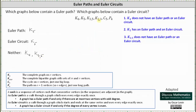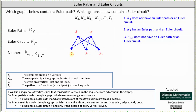Next, we have the complete bipartite graph K₂,₃, where we have two vertices in the first row and three vertices in the second row. Every vertex in the top row is adjacent to every vertex in the bottom row. The two vertices in the top row have degree three, and the three vertices in the bottom row have degree two. Because we have two vertices with an odd degree and three with an even degree, it does meet the condition for an Euler path since at most two vertices have an odd degree. K₂,₃ has an Euler path, but not an Euler circuit. We list K₂,₃ under Euler path only.